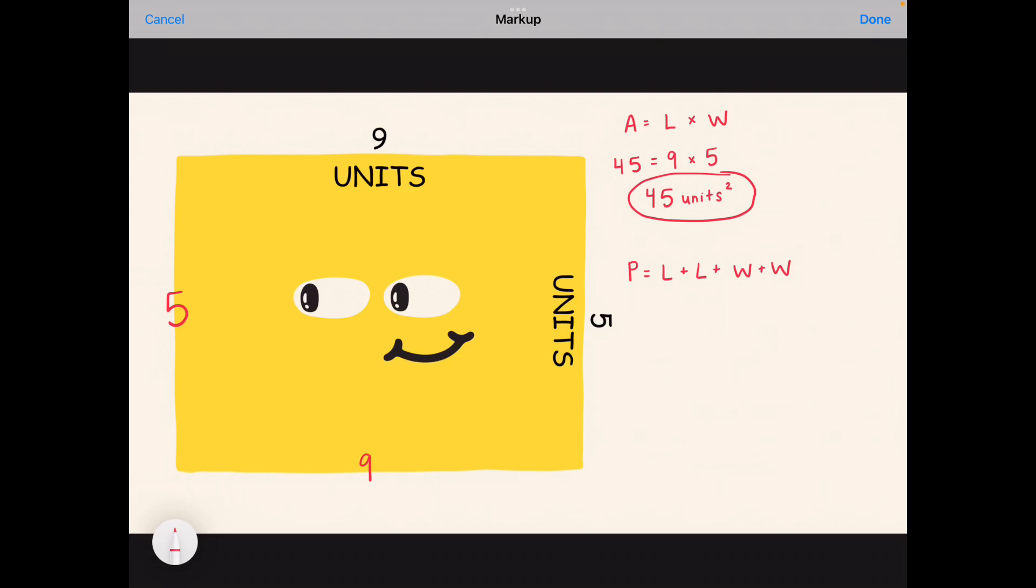And now I can plug in numbers for all of these letters. So the length, the first length is 9, the second length is also 9, the width is 5, the other width is also 5.